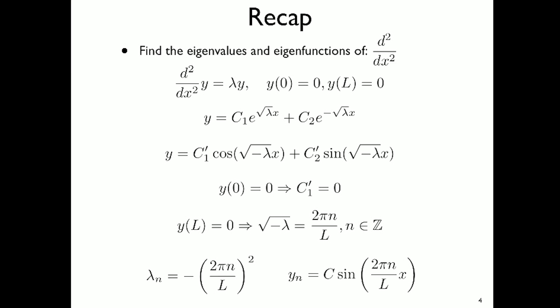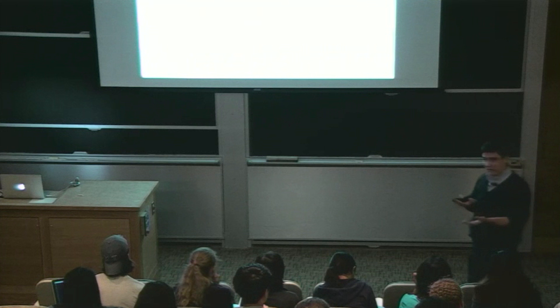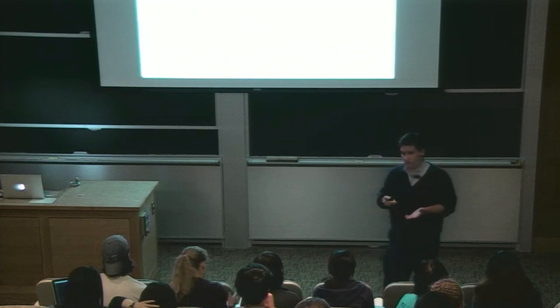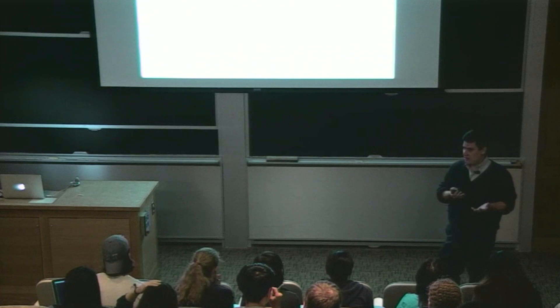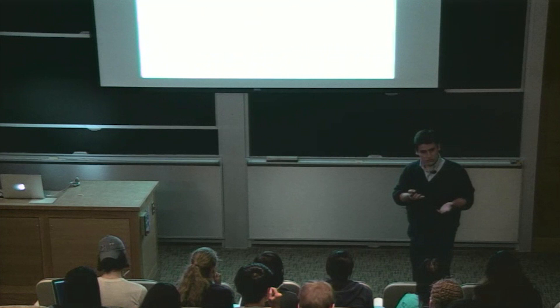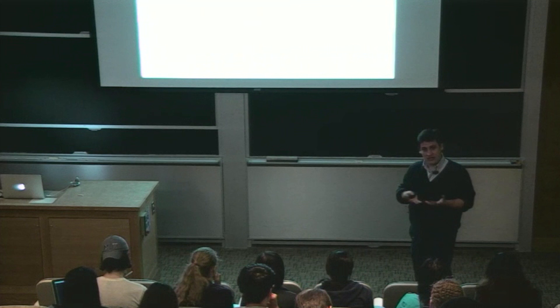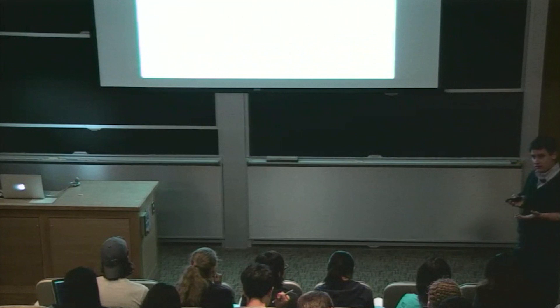So now we know the eigenvalues: the set of numbers minus (2πn over L) squared. There's an infinite number of eigenvalues — it's an infinite dimensional space. The eigenfunctions are scalar multiples of sine of the square root of minus lambda times x. There's a one-to-one correspondence between all the linear algebra we've done and linear differential equations. If you understand one, you understand the other.